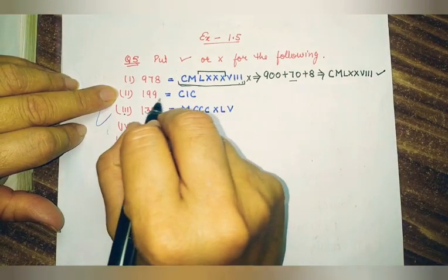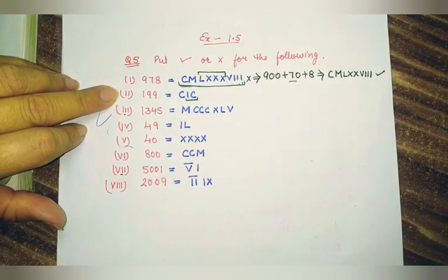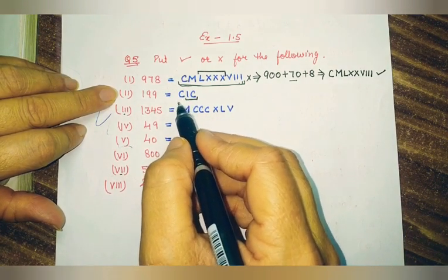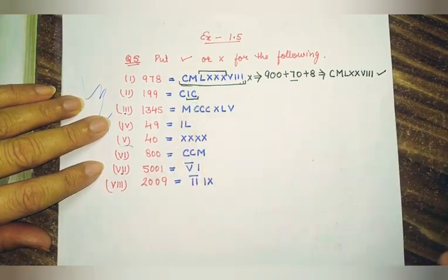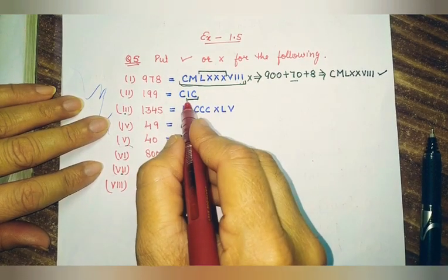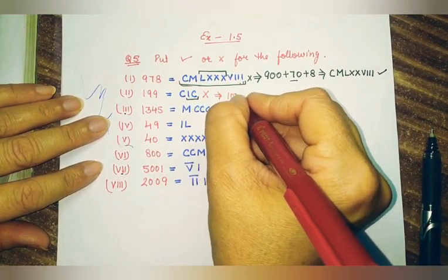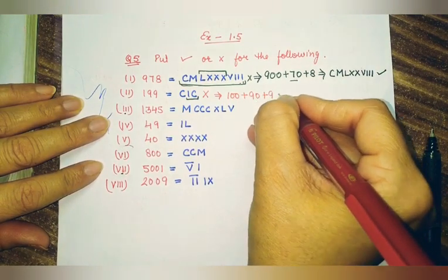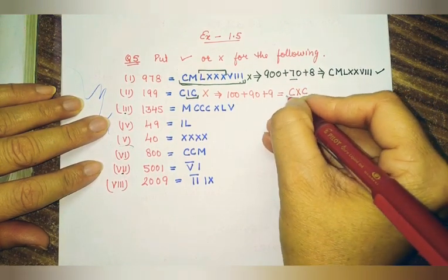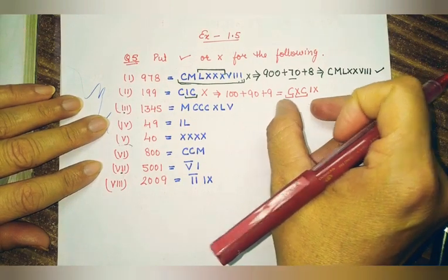Now the second number is 199. They have written it as using 100 minus 1 for 99, but according to the rule, I can be subtracted from only X and V — not from C. So that is wrong. The correct way: 199 equals 100 plus 90 plus 9. Write 100 as C. Write 90 as XC (100 minus 10). Write 9 as IX (10 minus 1). So the correct Roman numeral for 199 is CXCIX.